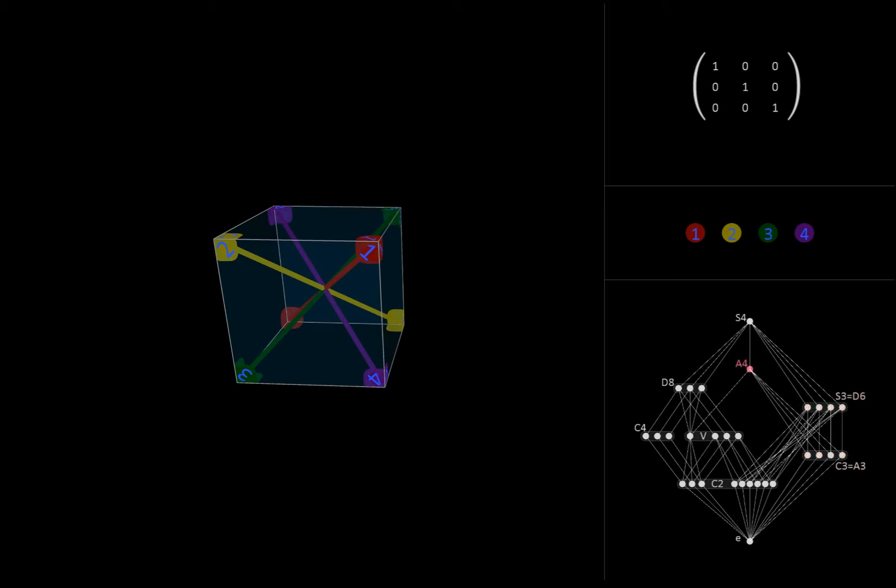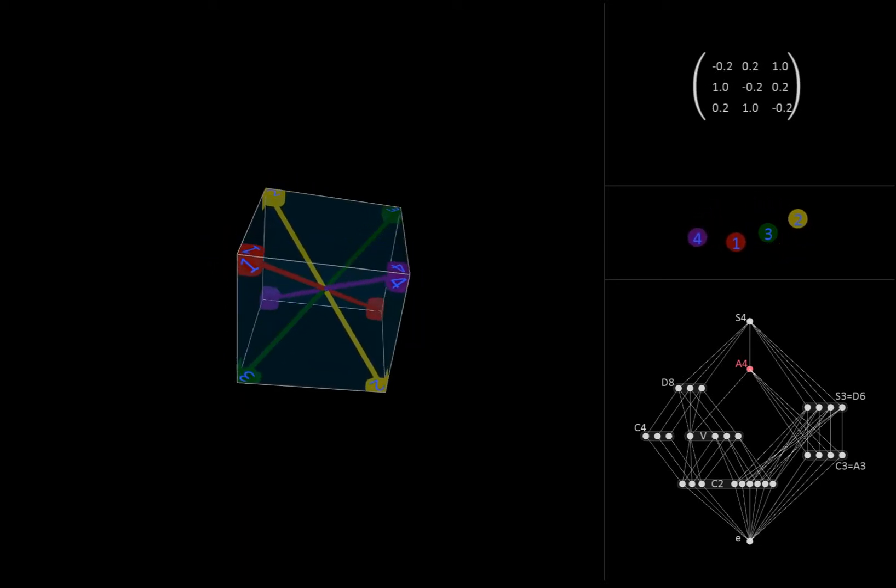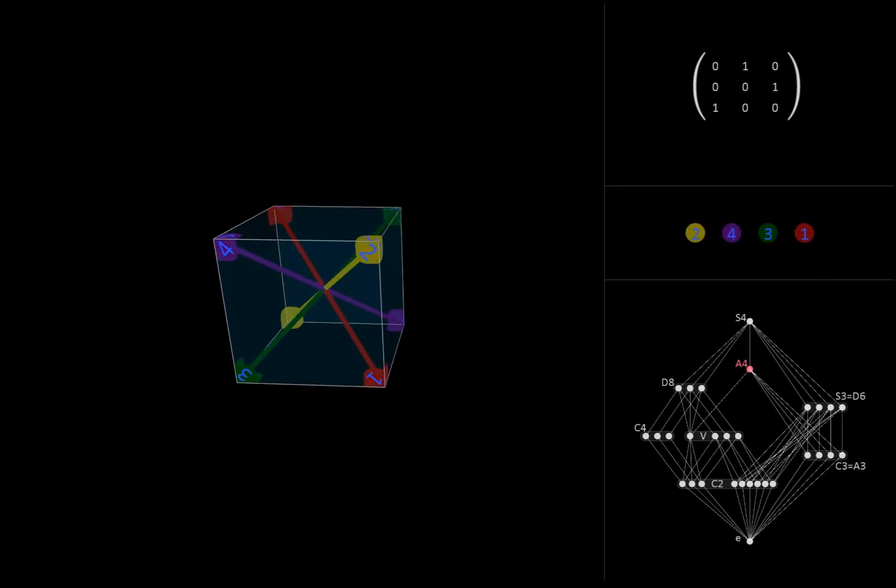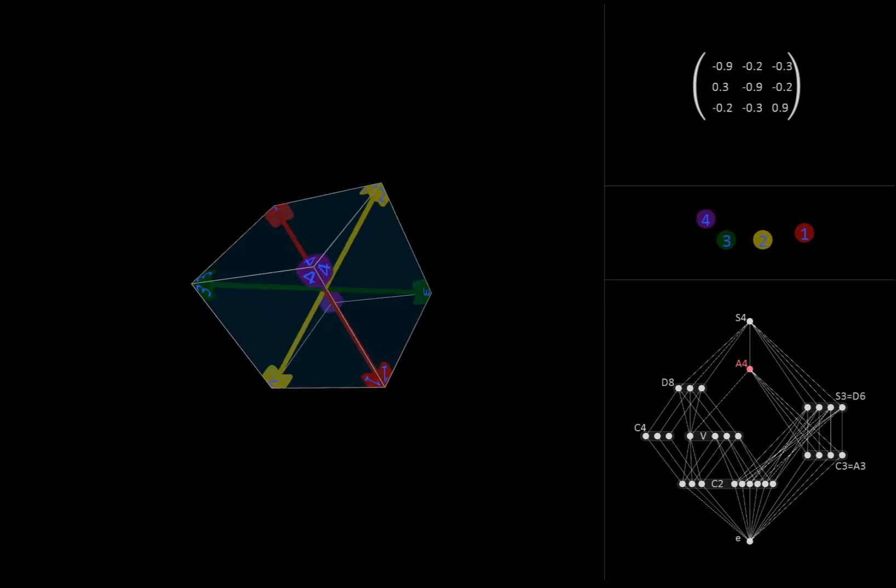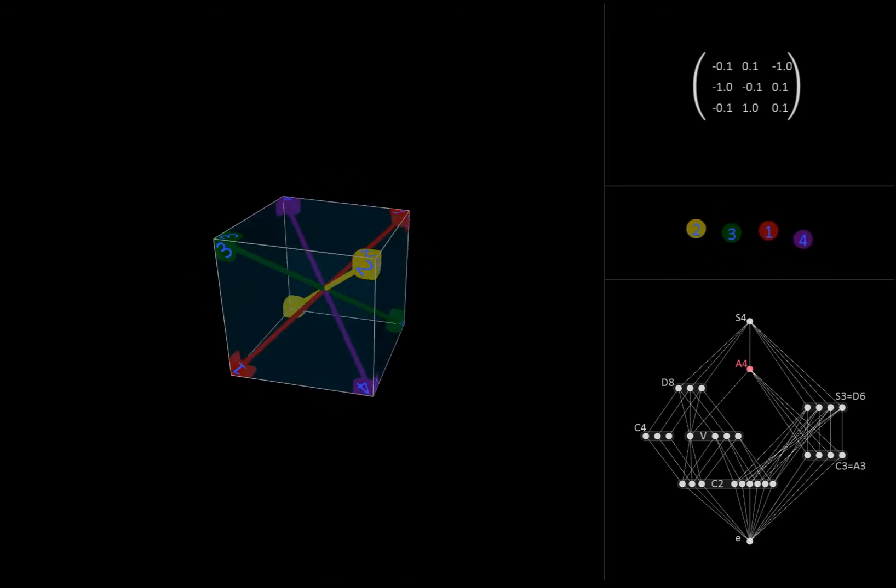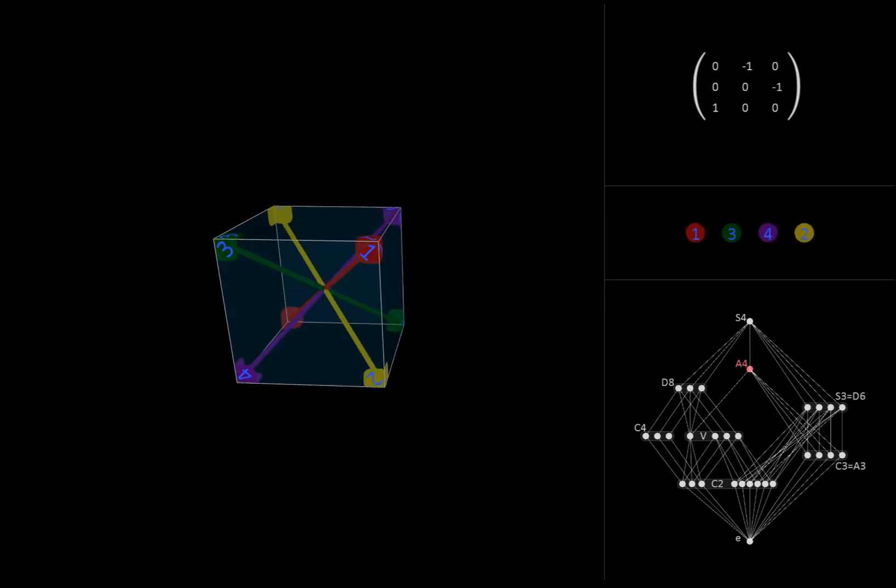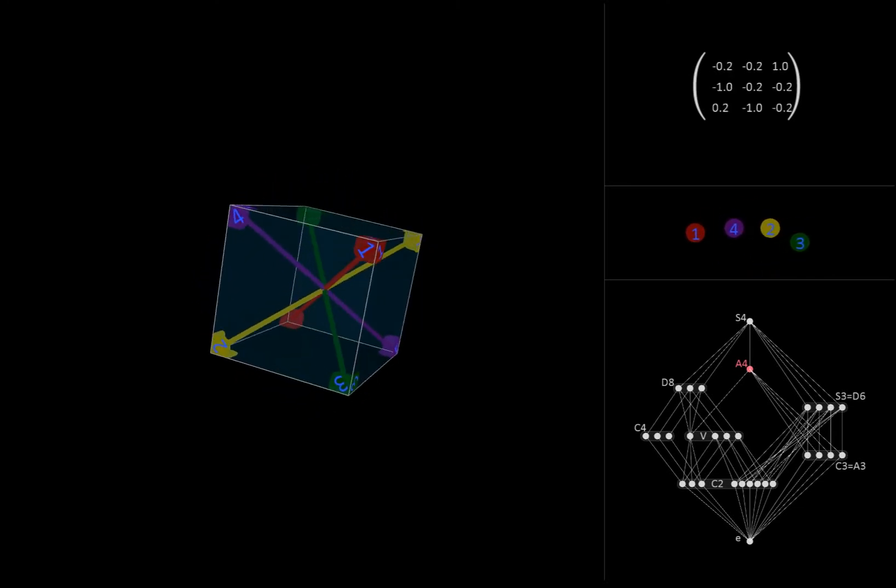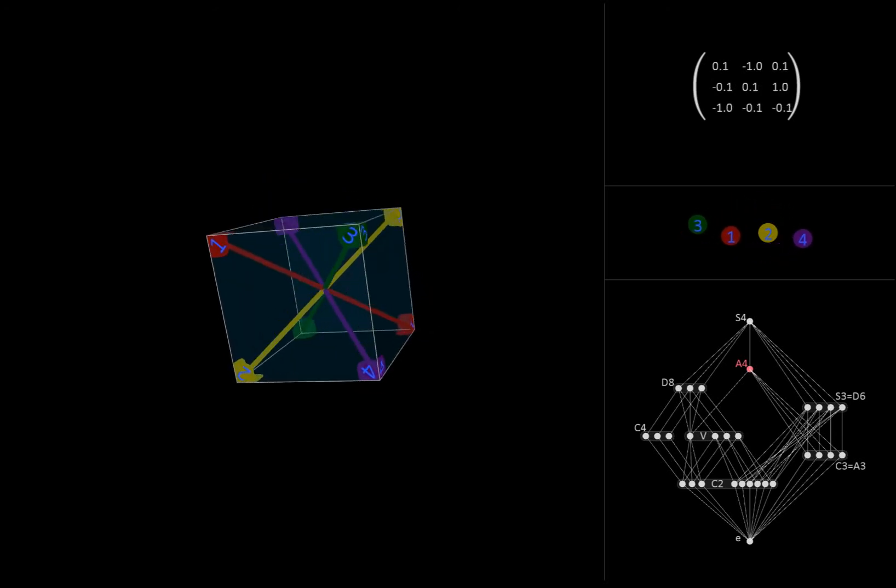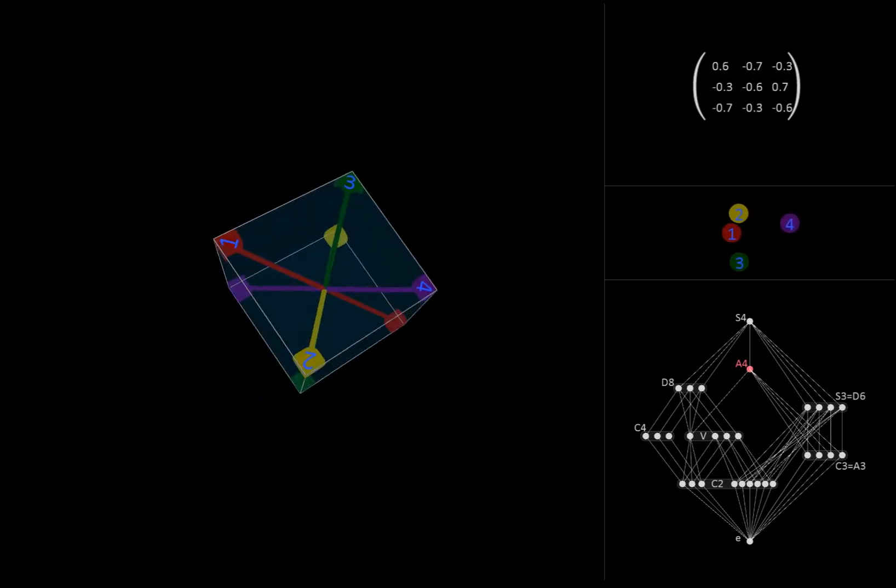Last but not least, let's take a look at the alternating group A4. This group consists of all even permutations of four objects. The smallest non-trivial even permutation is a three cycle. Just as any symmetric group can be generated by two cycles, any alternating group can be generated by three cycles. In our case, these correspond to 120 degree rotations about the diagonals. So, we can think of A4 as the set of all transformations we can create by combining these rotations.